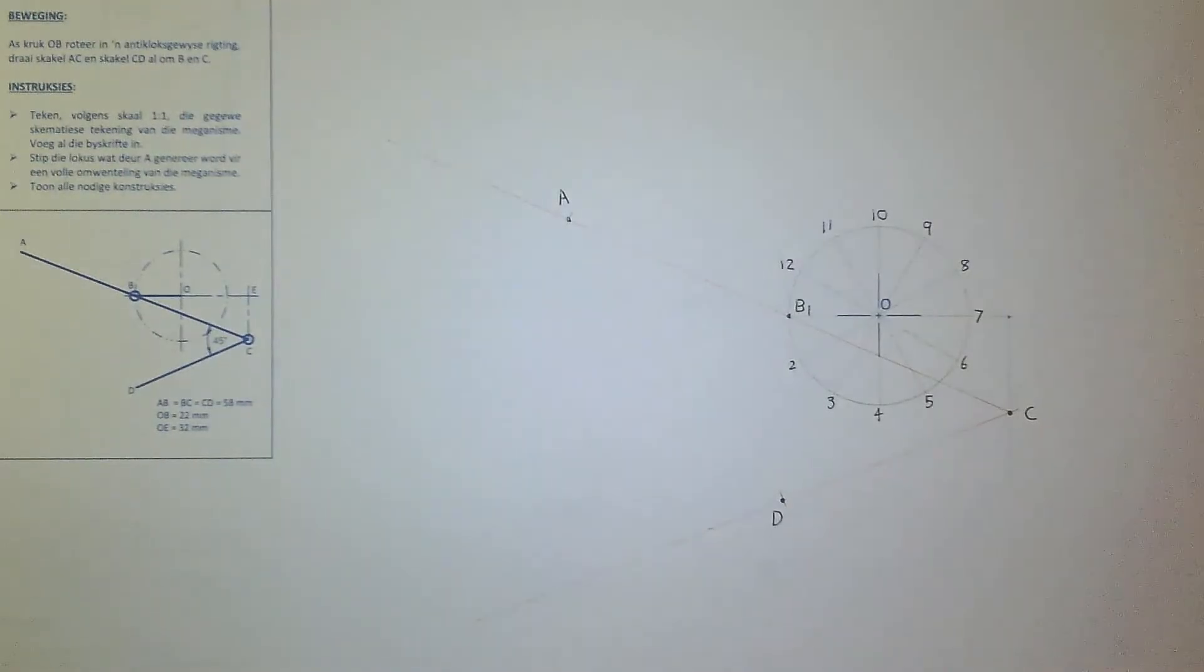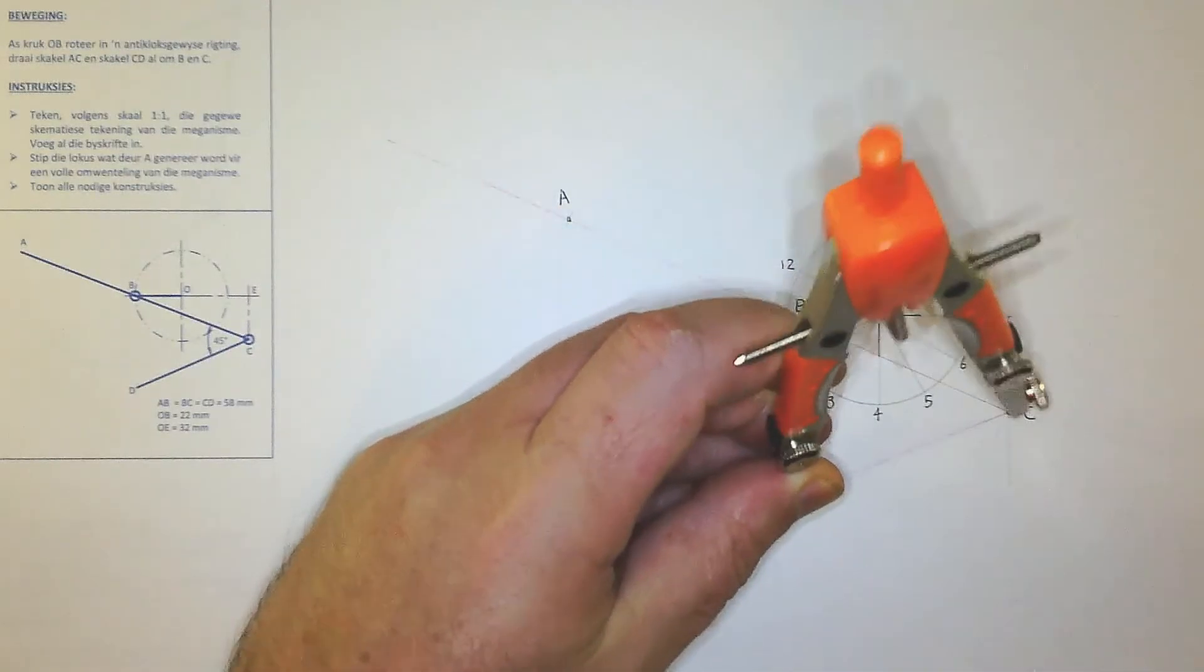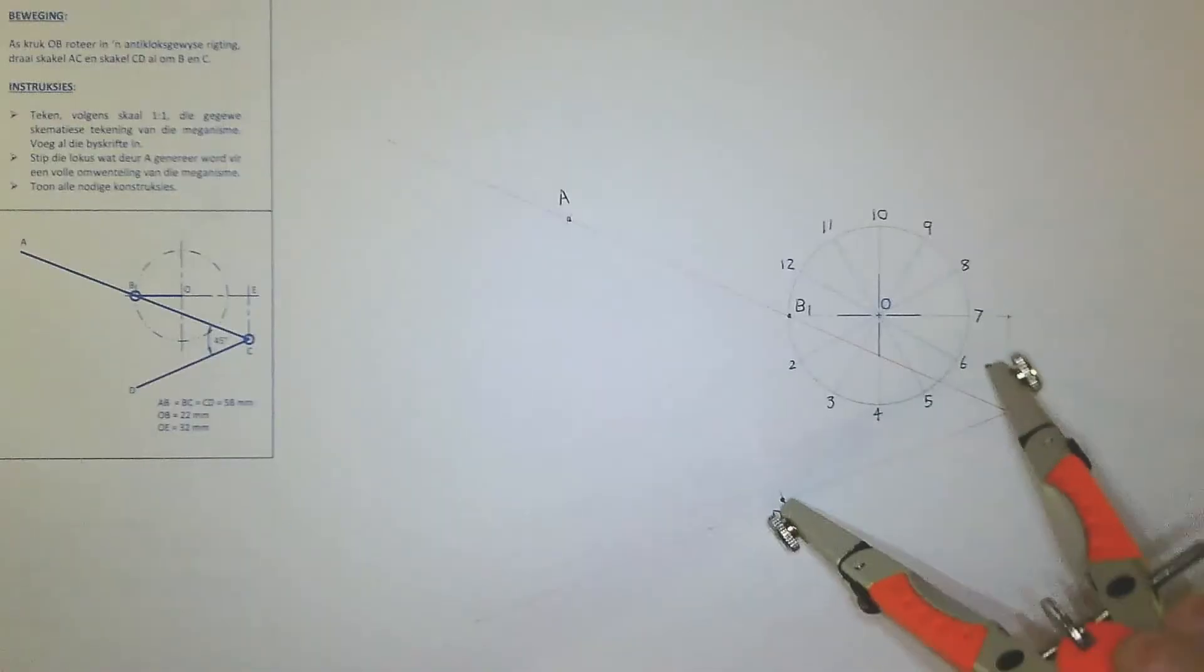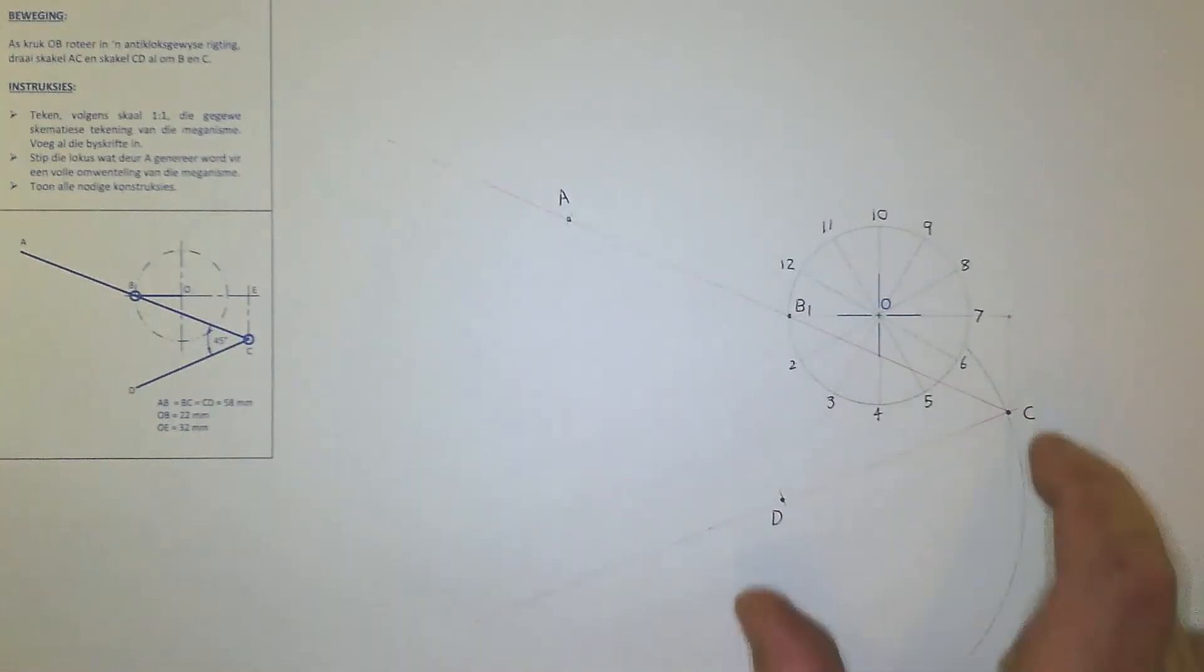So you can take your compass, which is still set to 58. You can place it on D, it should line up with C, and then you can draw a curve that runs through point C to mark down your other points. You can clearly see that on CB it's going to oscillate around point D.